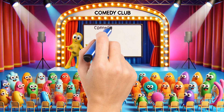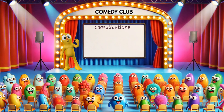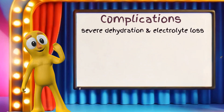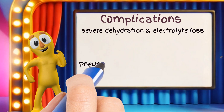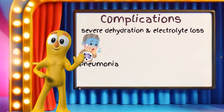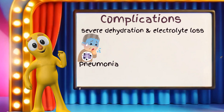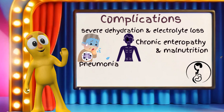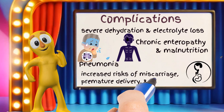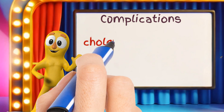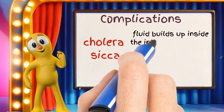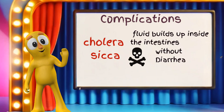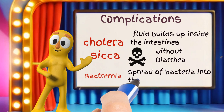Now let's talk about the complications. The most critical complication is hypovolemia, or severe dehydration and electrolyte loss, which can lead to shock and organ failure. Pneumonia is another serious issue, especially in children, often caused by vomiting and aspiration. Chronic enteropathy and malnutrition can develop in children under five. Pregnant women face increased risks of miscarriage, premature delivery, and stillbirth. There's also a rare form called cholera sicca, where fluid builds up inside the intestines, leading to circulatory collapse and death without diarrhea. And although rare, bacteremia — the spread of bacteria into the bloodstream — can occur.